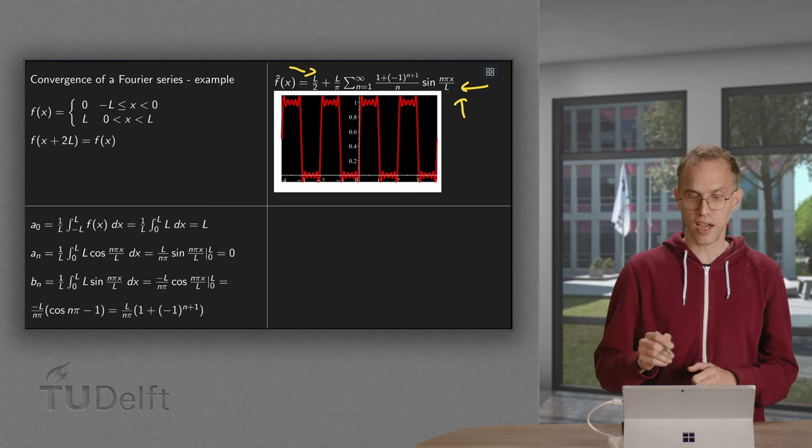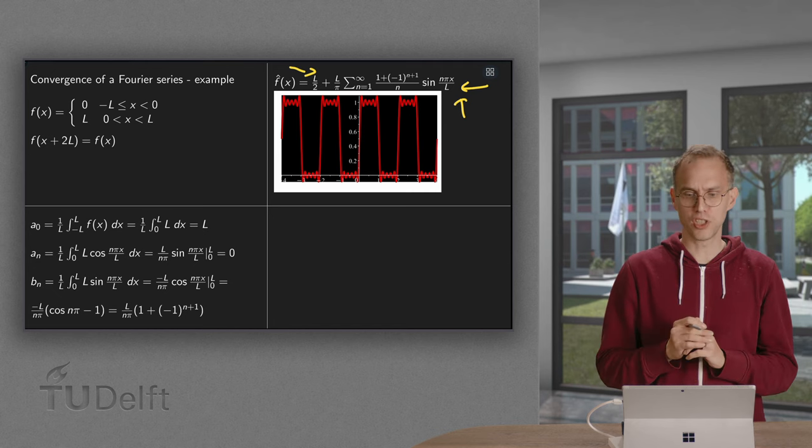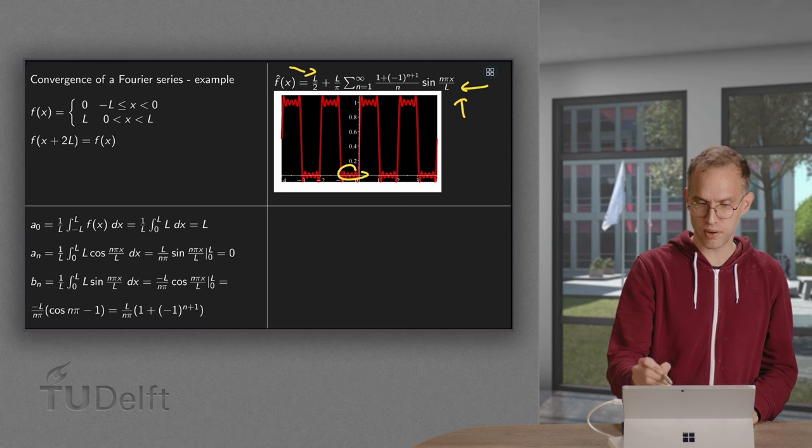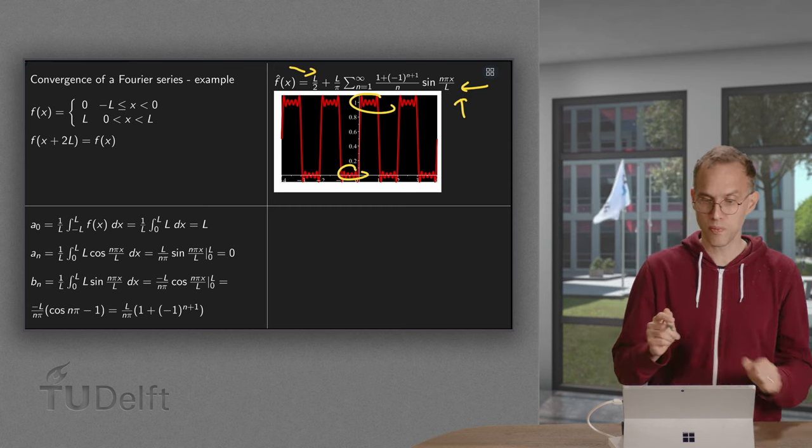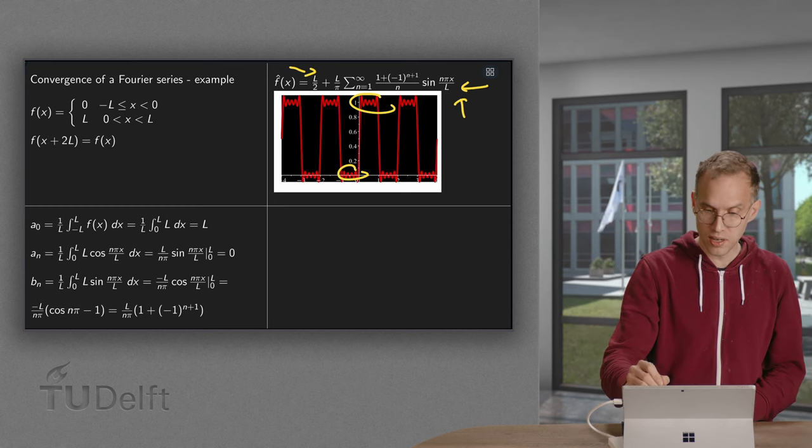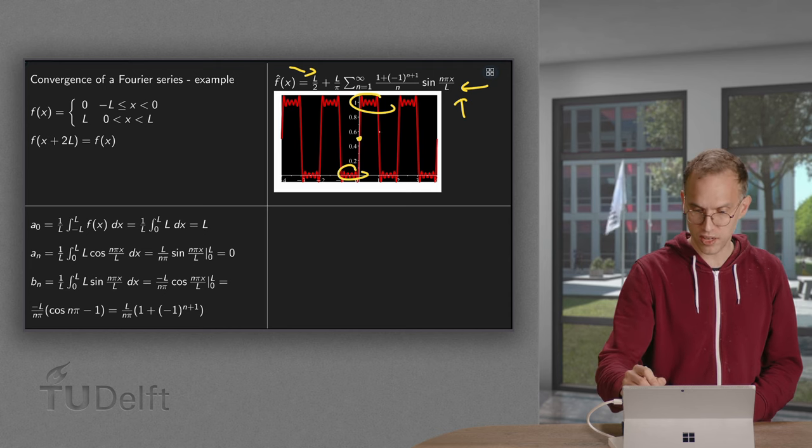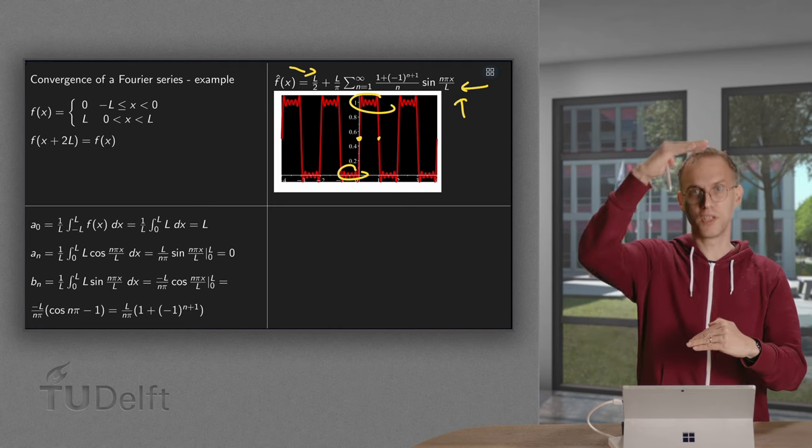Then over here I plotted already quite a lot of terms, I think 10 or so, the first 10 coefficients. And you see we nicely jump from 0 to l, in the program I set l to 1, and halfway, at the jump point, we indeed get this 1 half. So we get 1 half halfway, and then jump from 0 to 1, and from 1 to 0 back.